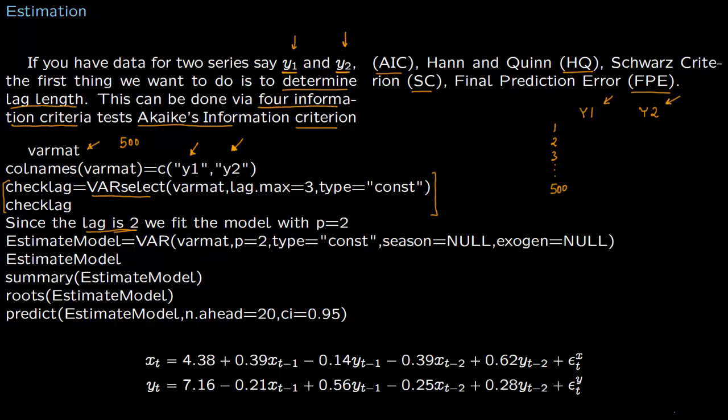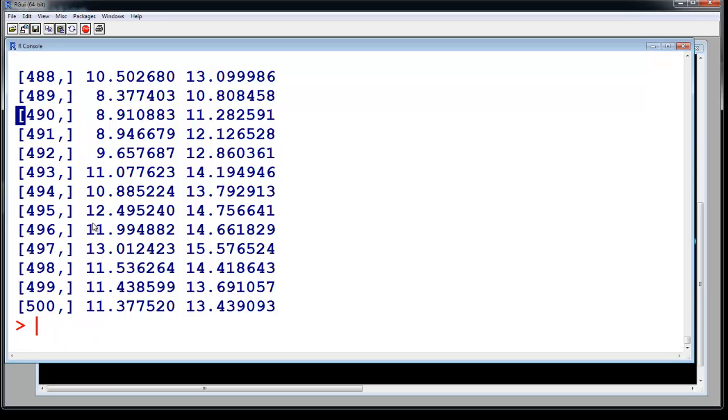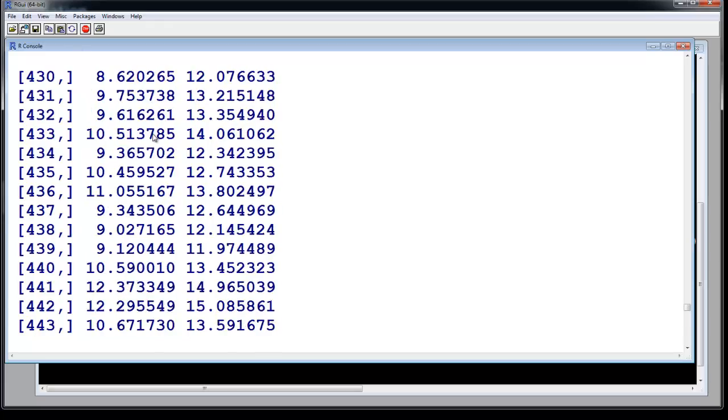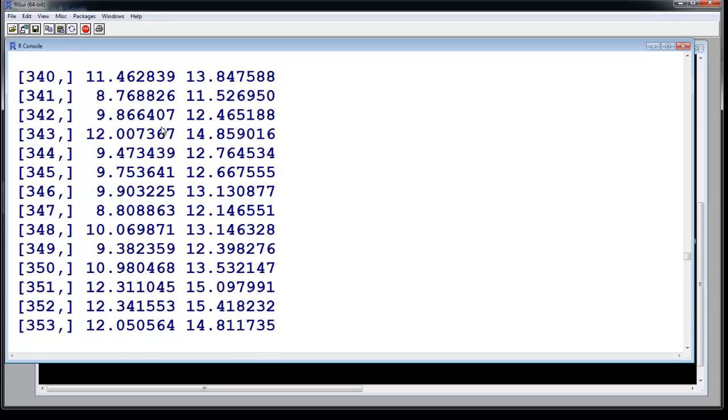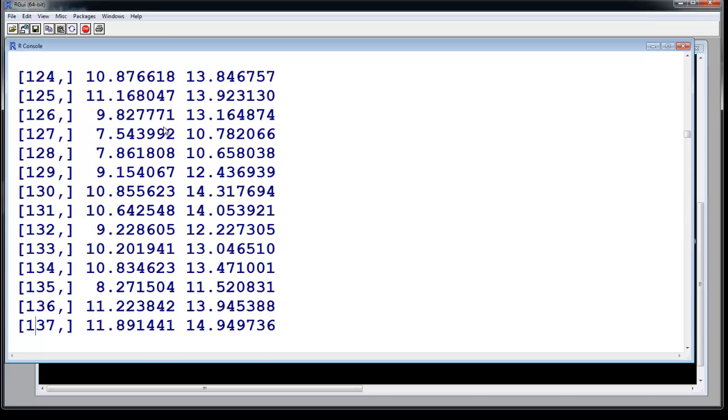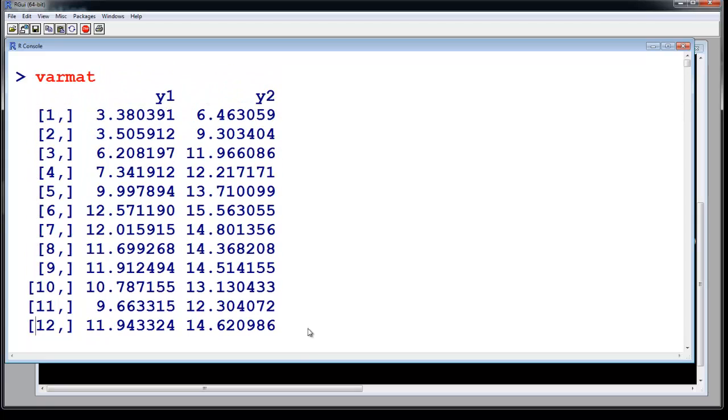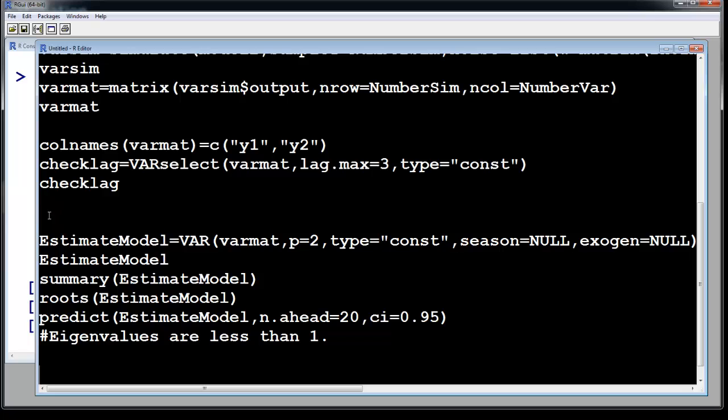We have this VAR matrix which we produced in our last lecture, so this is how it looks like. There are 500 values and say these are prices of two commodities, just some random values right now, so y1 and y2. The first thing you want to do is you just change the column names to y1 and y2, then you check lag.